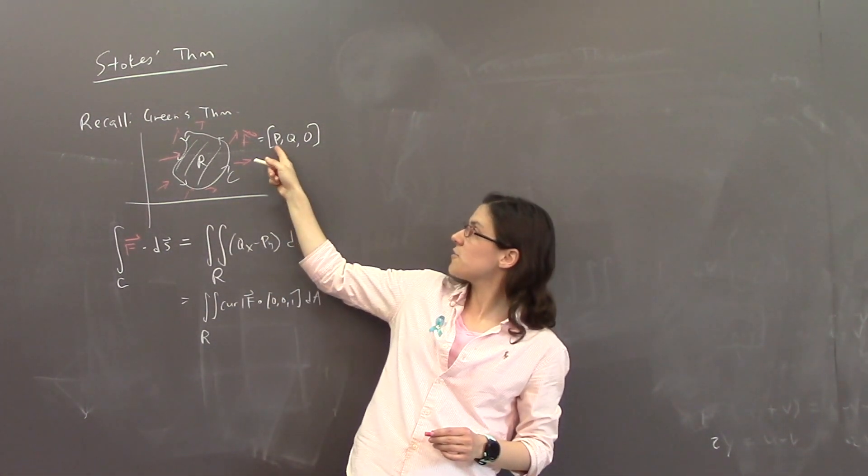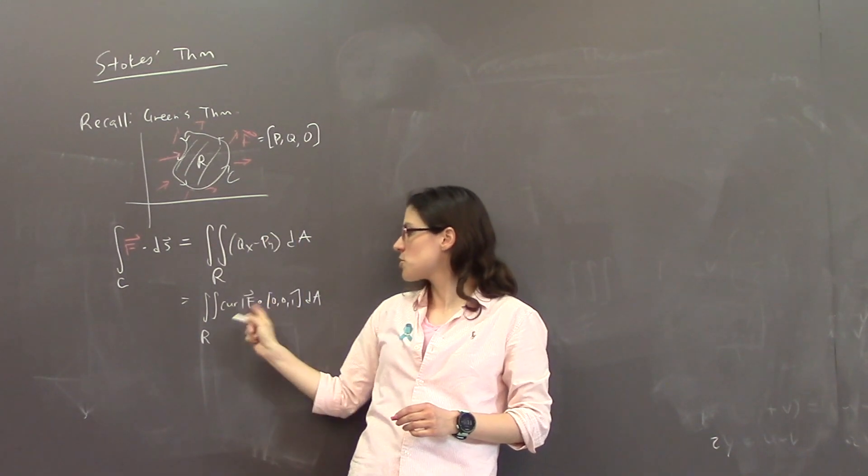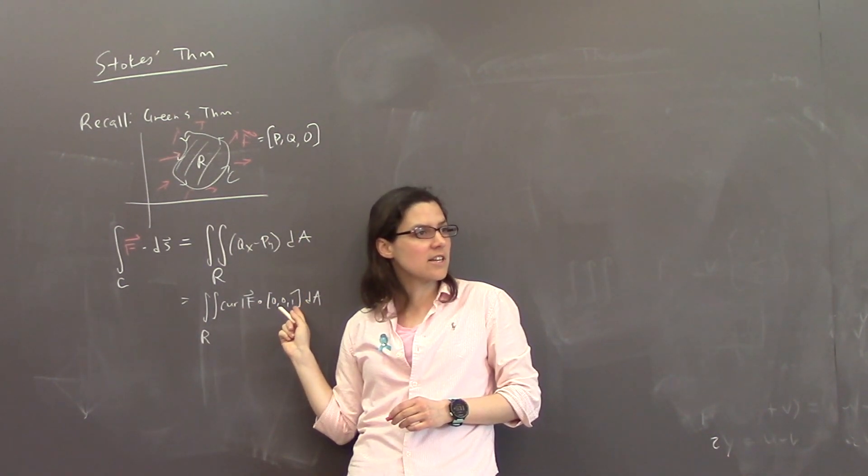Because if we computed, if F was pq0, and we computed the curl, you're just pulling out the last component. So it's like dotting it with 0, 0, 1.